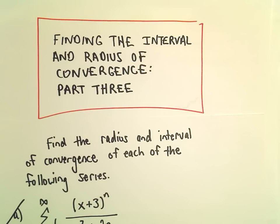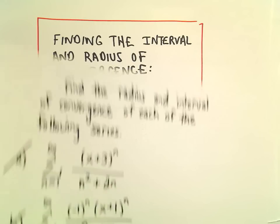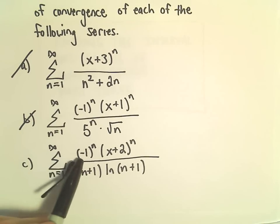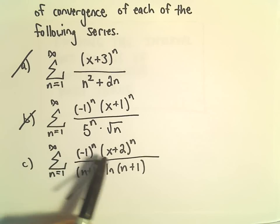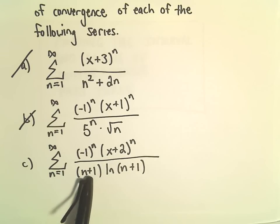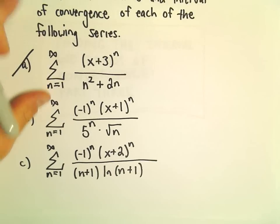Alright, so one more example here — finding the interval and radius of convergence. We have the series from 1 to infinity of negative 1 to the n, times x plus 2 raised to the n, over n plus 1 times the natural logarithm of n plus 1. So again, we'll use the ratio test.